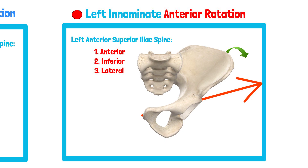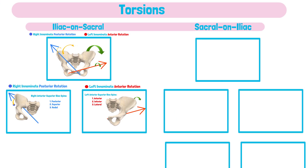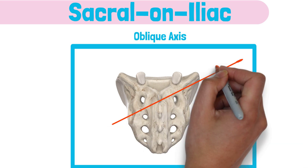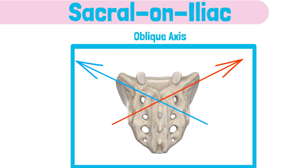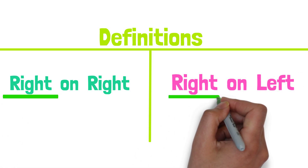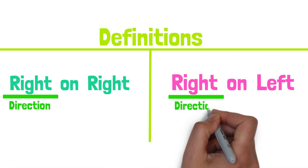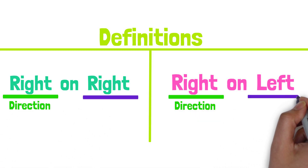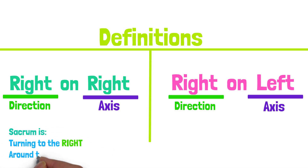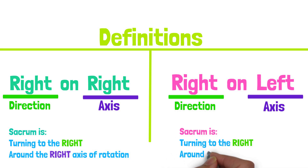Now let's examine the sacral on iliac movement. The movement of the sacrum in the transverse plane occurs around an oblique axis and appears to be a combination of side bending and rotation. Typically, it is described as right-on-right torsion or right-on-left torsion. The first word refers to the direction the sacrum is turning; the second word refers to the axis around which the sacrum is rotating. So right-on-right means it's turning to the right around the right axis of rotation, and right-on-left means the sacrum is turning to the right around the left axis of rotation.